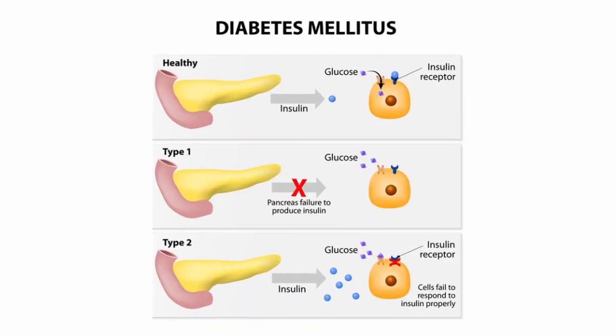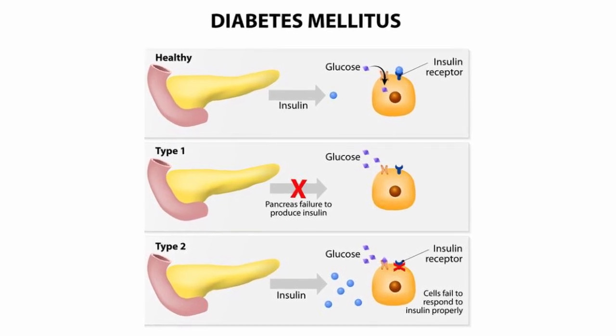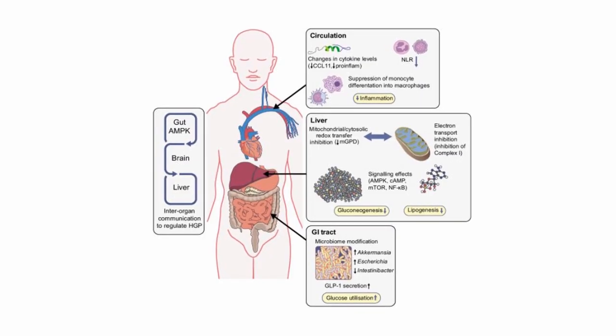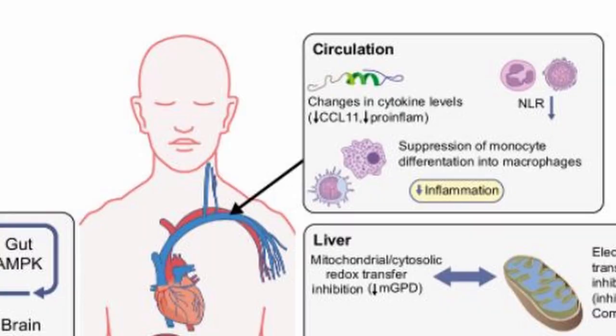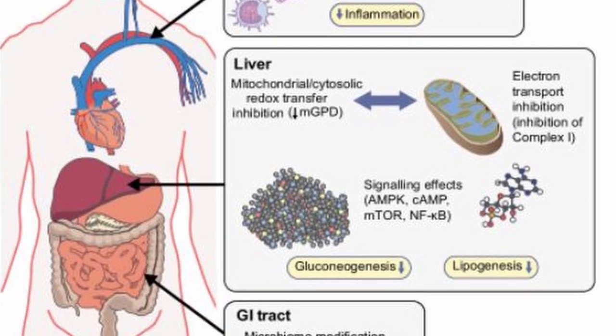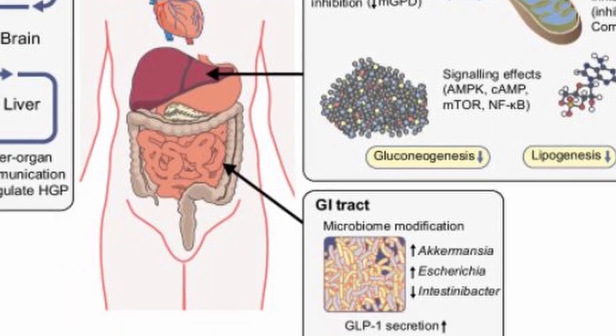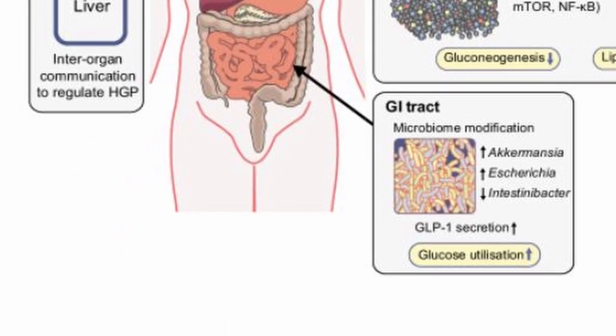I found two different images — one about normal insulin glucose response, type 1 diabetes, and type 2 diabetes showing the differences. Then I found one picture of the body showing how metformin works on a cellular level and literally just broke that picture down: the top talked about how it affects circulation, the middle talked about how it affects the liver.